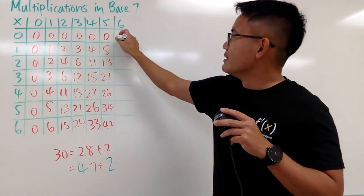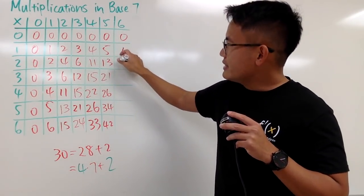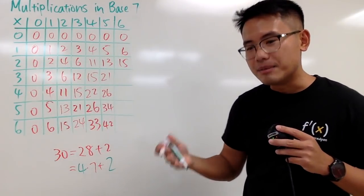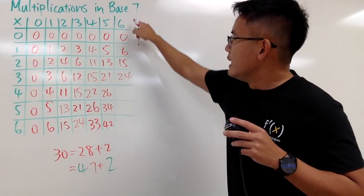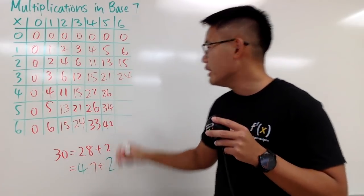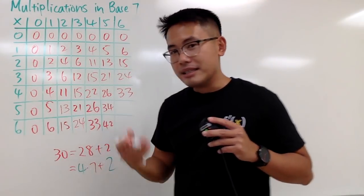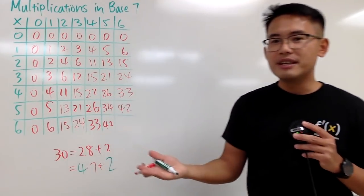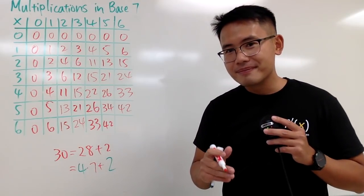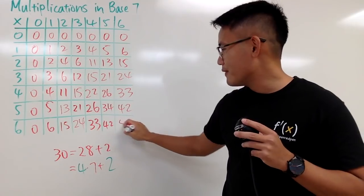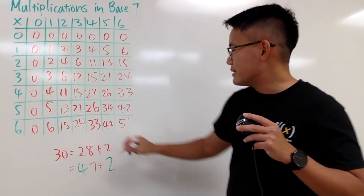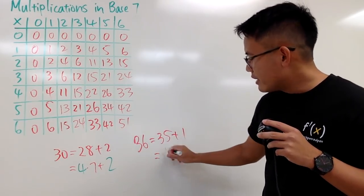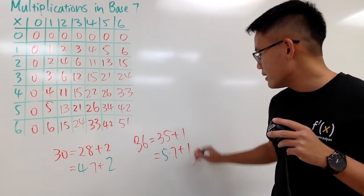Next, 6 times 0 is 0. 6 times 1 is 6. 6 times 2 is 12, which is 1, 5. 6 times 3 is 18, which is 14 plus 4, so that's 2, 4. 6 times 4 is 24. 24 is the same as 21 plus 3, so that's 3, 3. 6 times 5 is 30, which is 4, 2. And lastly, 6 times 6, which is 36. But 36 is 35 plus 1, so you put down 5, 1. Once again, 6 times 6 is 36 in the usual sense, but you look at this as 35 plus 1. And this right here is because you have 5 times 7 plus 1.